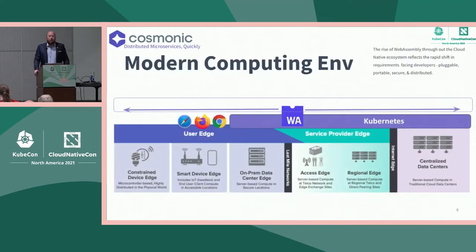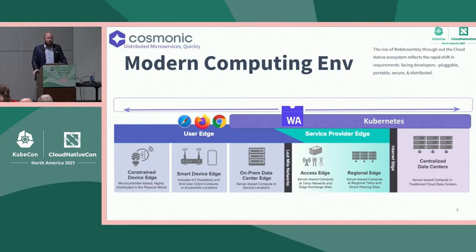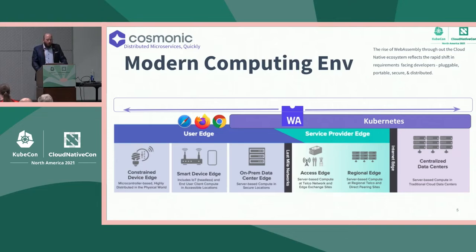We're going to look at the modern computing environment. This picture of the world is really what is going to drive the next 20 years of change. On the far left side we have the central public cloud, and on the far right we have the tiniest devices — tiny watches, refrigerators. There is a continuum where Kubernetes will work great and containers can be brought to the edge. But there are an increasing number of cases that do not depend on Linux and will not run Kubernetes, like your web browser and lower-power, memory-constrained devices.